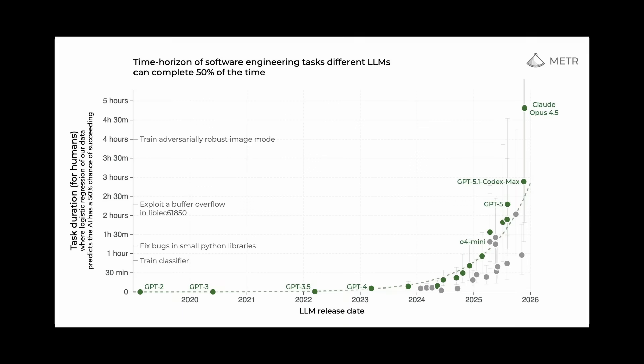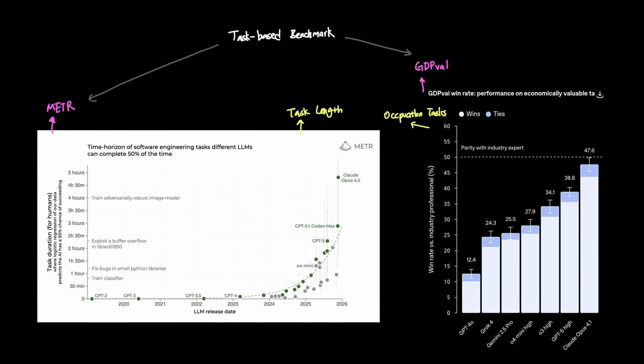Recently, Opus 4.5 achieved a 50% time horizon of 4 hours and 49 minutes. To clarify a common misunderstanding of this benchmark, this is measuring the depth of the task, not the speed. In other words, it's not saying that Opus 4.5 worked for 4 hours and 49 minutes to finish the task, but it's measuring the LLMs raw capability to successfully finish a task that human experts would take at various lengths.